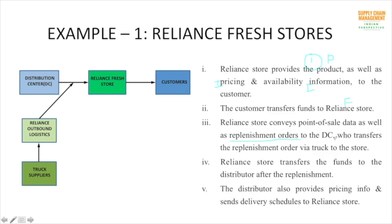Before a retailer gets products from a distributor, there is a flow of information. Replenishment orders are the orders that a retailer wants a distributor to fulfill — essentially an Excel file containing the names of all products the retailer is short on and how much of each product is needed. All orders are fulfilled by the distribution center — this is the flow of information. Once the distribution center receives this information, it replenishes the order through trucks, which is the flow of product.